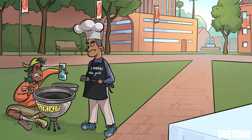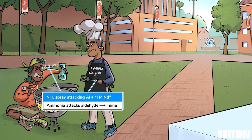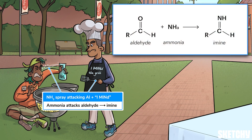So maybe Al needs a little more practice at stealth cleaning — always look before you spray, kids. Al attacking himself with ammonia should help you remember that in the first step of the Strecker synthesis, ammonia attacks the aldehyde's carbonyl carbon to create an imine. See that 'I mind the grill' apron on the guy next to Al? He may be weirdly possessive of his hot dog flipping responsibilities, but he's also a nice reminder of imines.